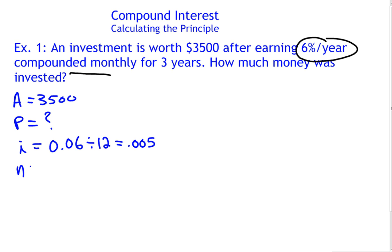And just a reminder here that n is the number of compounding periods. This was for 3 years, compounded monthly. So it's compounded every month for 3 years. 3 times 12 gives us a total of 36 times.